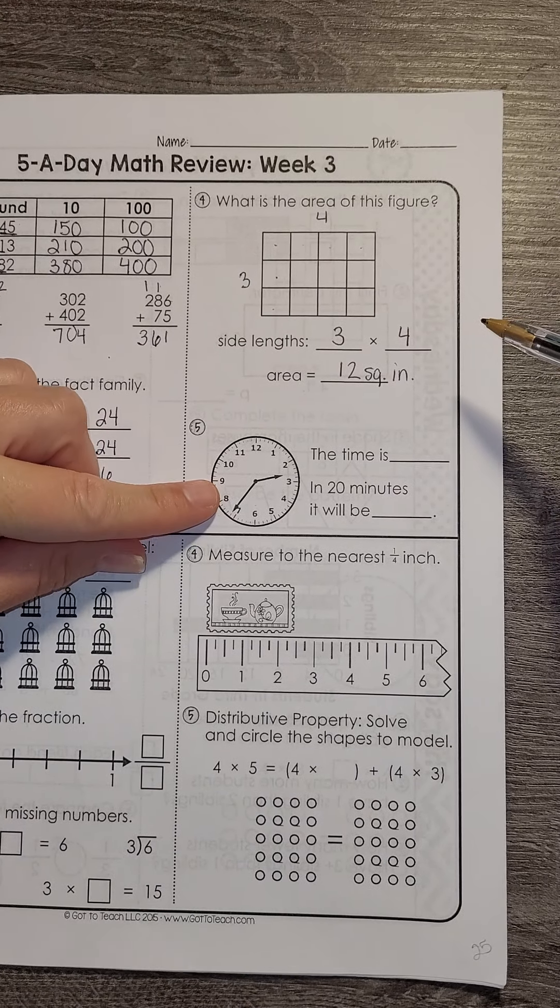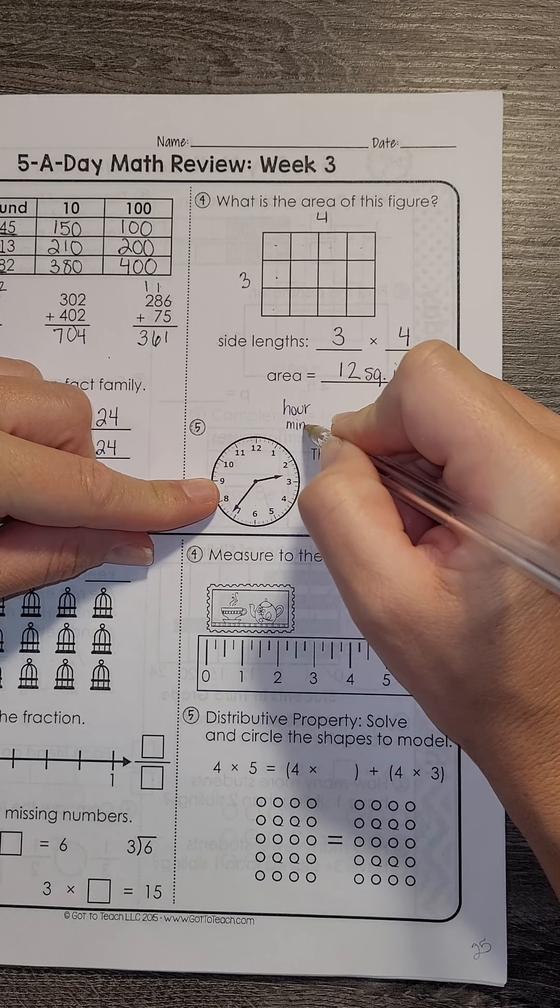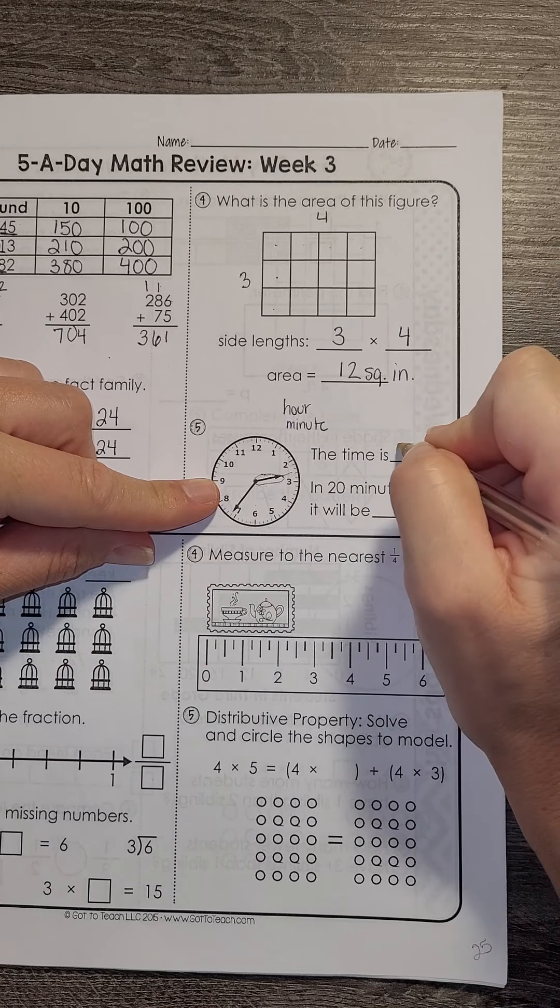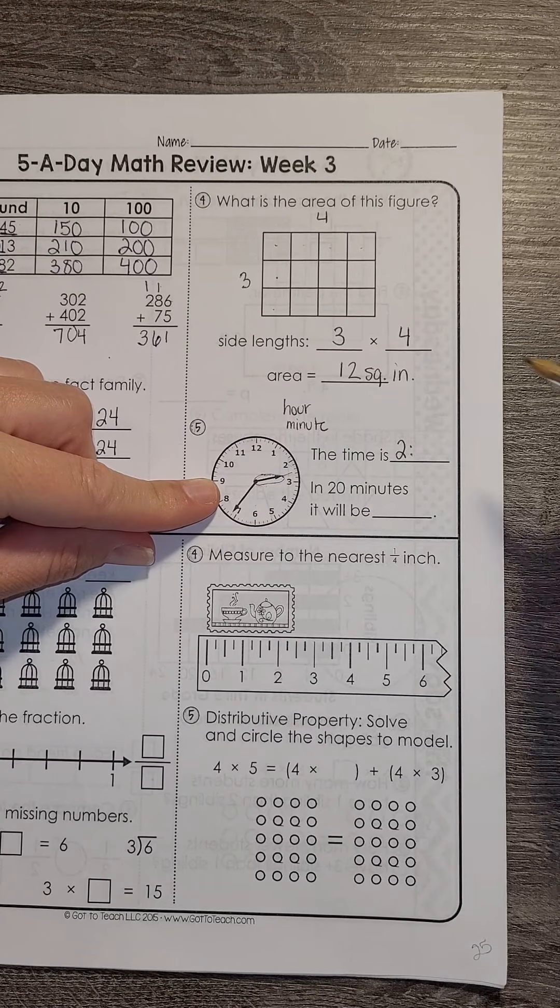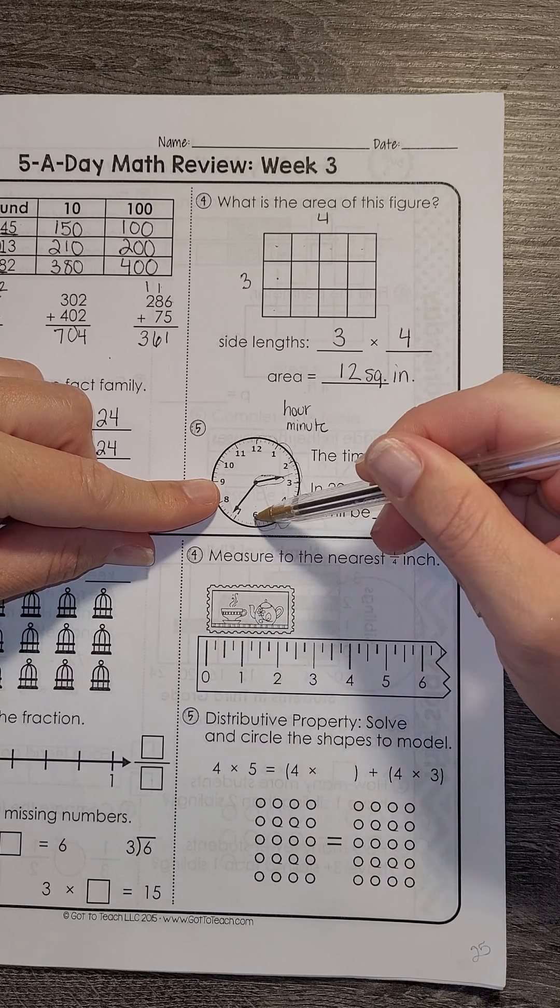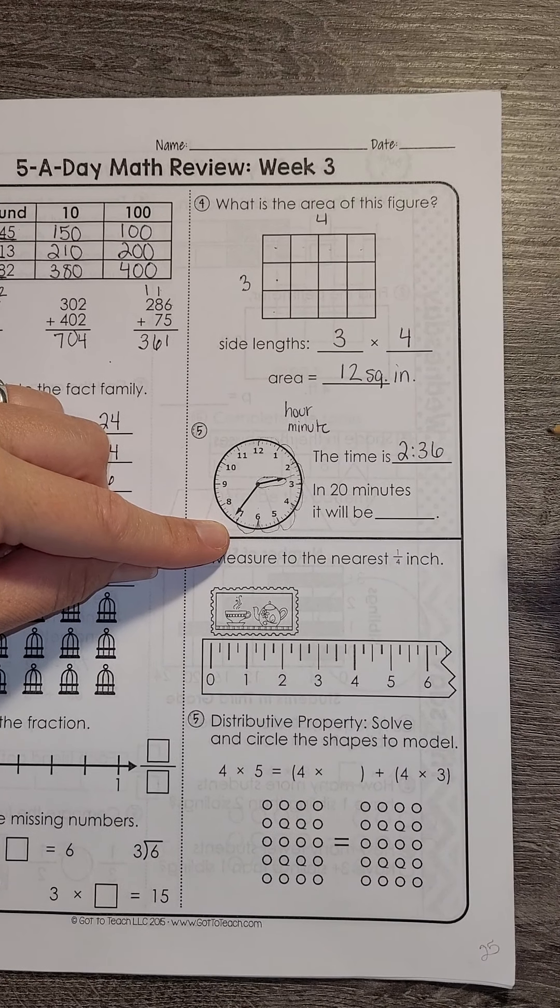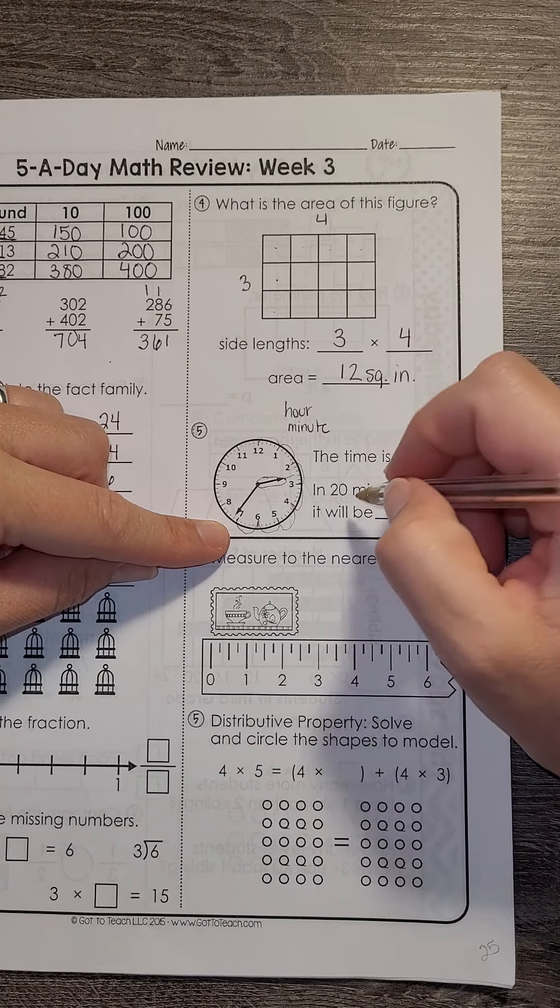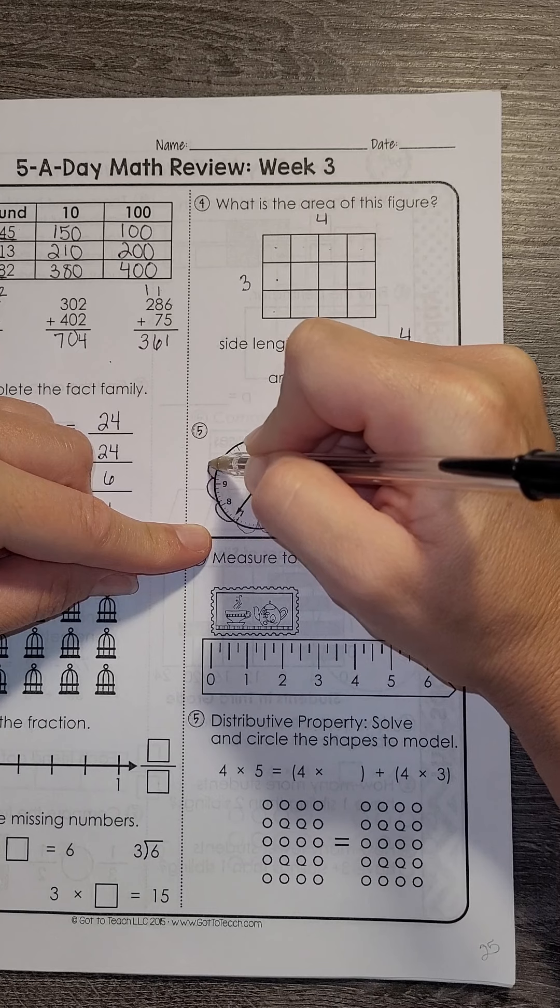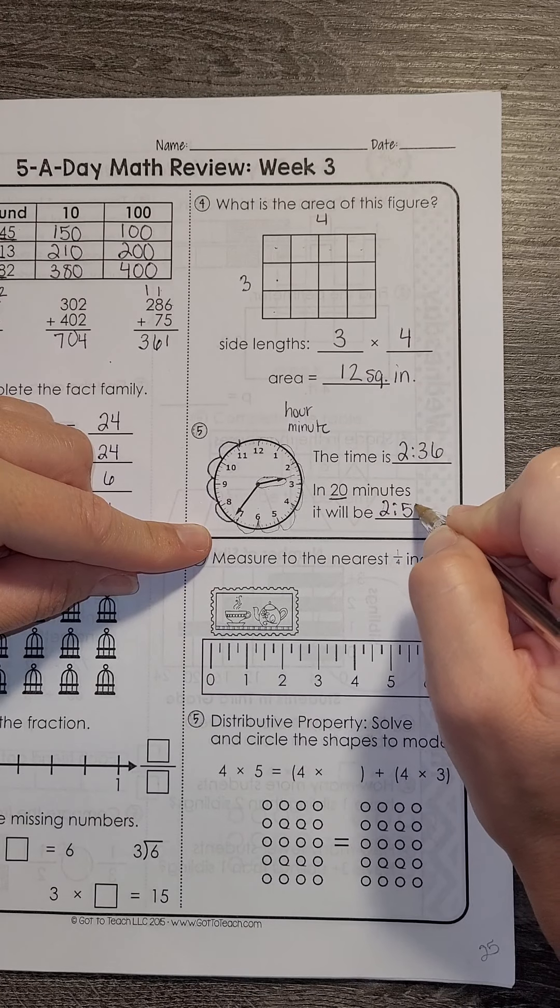And clock. This is one that I saw lots of friends getting wrong. Remember the hour hand is shorter than the minute hand. So here is the hour hand. It's between 2 and 3, so we know we're still at 2 o'clock. Then we count by 5s: 5, 10, 15, 20, 25, 30, 35, and one more past it is 36. So the current time is 2:36. We're going up 20 minutes, so I can count up: 5, 10, 15, 20, and I would be at 2:56.